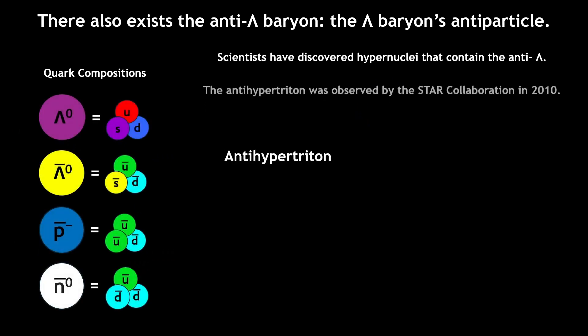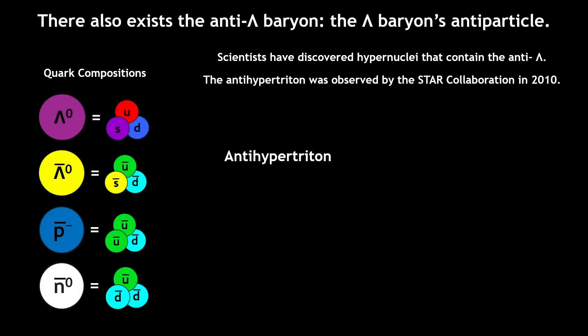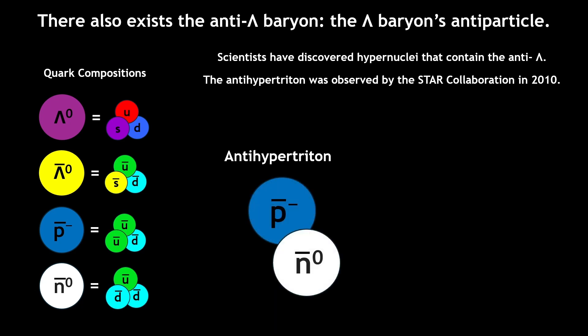Firstly, the anti-hypertriton was observed in 2010 by the STAR collaboration, and contains one anti-proton, one anti-neutron, and one anti-lambda baryon. The existence of this anti-hypernucleus has already raised an endless amount of questions, but in August 2024, a new discovery arose.